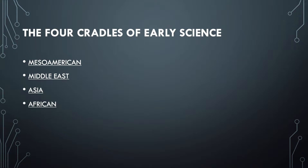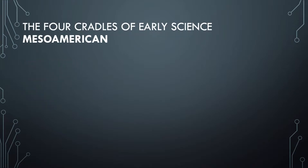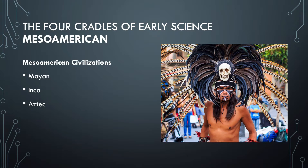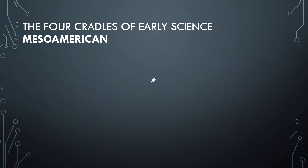For the Mesoamerican, there are at least three civilizations: the Mayans, the Incas, and the Aztecs — this picture denotes the Aztecs. These are the four cradles of early science, and now we'll talk about their contributions to the world.